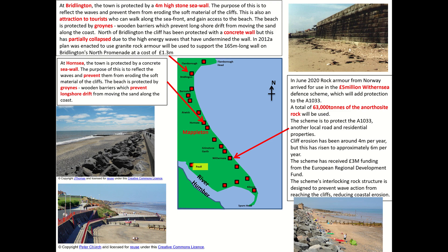Bridlington has a four-metre high sea wall that reflects waves back, provides access for tourists along the seafront, and the beach is also protected by groins — wooden barriers which prevent longshore drift from moving sand along the coast. Just to the north of Bridlington the cliffs are protected by concrete walls, but these partially collapsed and in 2012 a plan was enacted to use granite rock armour to support the wall, costing 1.3 million pounds.